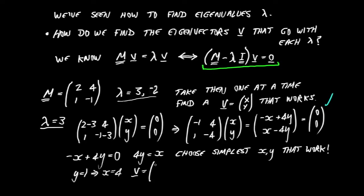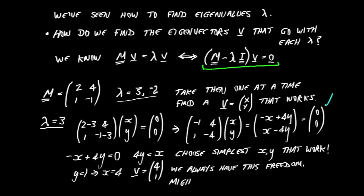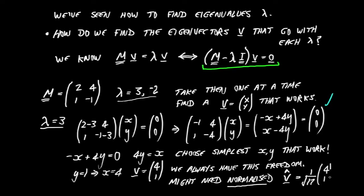That is a perfectly acceptable eigenvector to go with our eigenvalue. We will always have freedom in choosing the elements of our eigenvector — this freedom simply corresponds to choosing how long the eigenvector is, i.e., its magnitude. If a particular eigenvector satisfies our equations, a scaled version will still satisfy with the same eigenvalue. If we were asked for a normalized eigenvector, we take the one we found and scale it to unit length — in this case 4, 1, we divide by root 17.